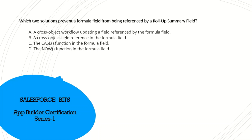Which solution prevents a formula field from being referenced by a roll-up summary field? Options are: A: cross-object workflow updating a field referenced by a formula field, B: cross-object field reference in the formula field, C: case function in the formula field, and D: NOW function in the formula field. I was initially confused between A and B, but the correct answer is A and D — a cross-object workflow updating a field referenced by a formula field, and the NOW function in the formula field, both prevent it from being used in a roll-up summary field.